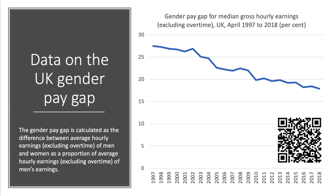The gender pay gap is of course an important aspect of labour market discrimination. The gender pay gap remains large, although it is falling in the UK. If you take the pay gap for median gross hourly earnings in the UK, the latest data shows a gender pay gap of about 17%. It is calculated as the difference between the average hourly earnings of men and women as a proportion of average hourly earnings. So a 15% pay gap means that women on average earn 15% less per hour than men. For more detail, just point your smartphone camera at the QR code.